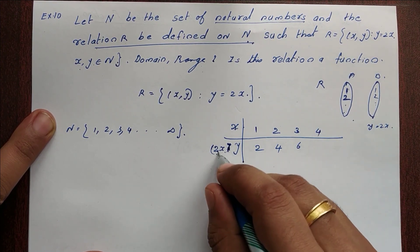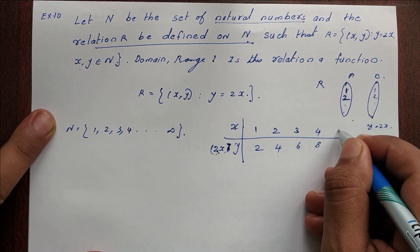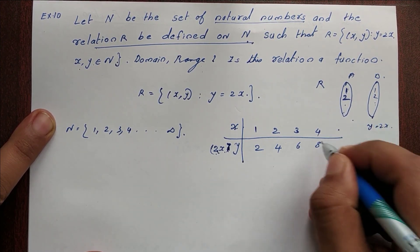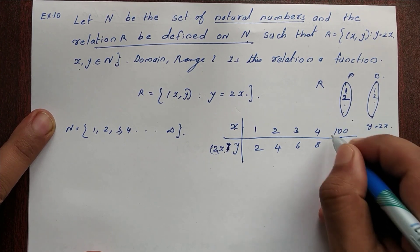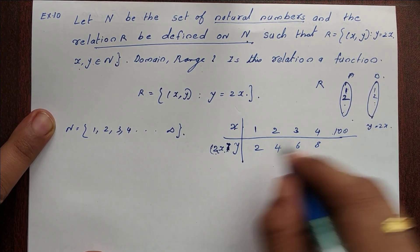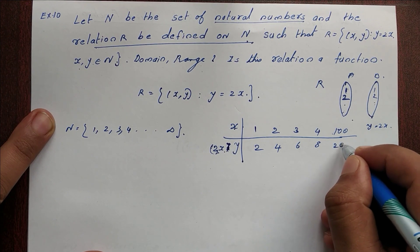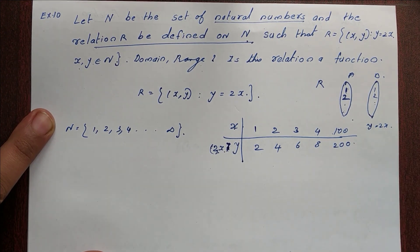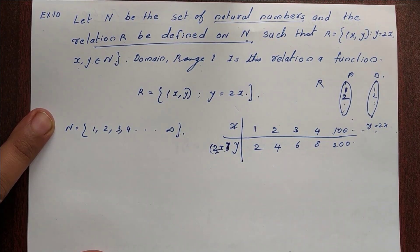We can also extend further — for example, 100 is a natural number, and 100 × 2 = 200. This pattern continues infinitely.